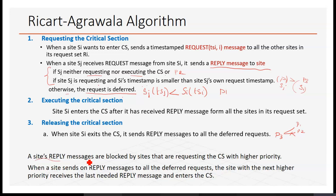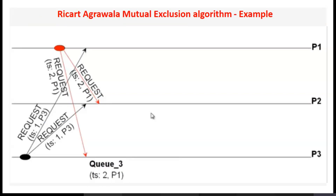The reply messages are blocked for sites when the site is requesting the CS with higher priority. For example, when a site sends a reply message to P2 and P3, similarly P3 also wants to enter the critical section and its timestamp is 1, so it sends a request with timestamp 1 to P1 and P2.